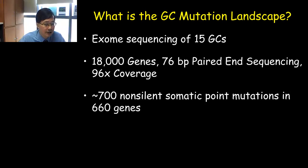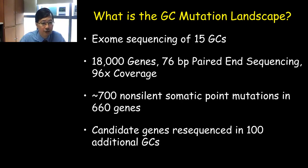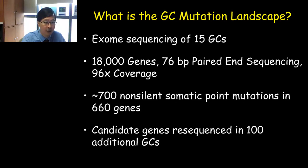Collectively, in this initial discovery series of 15 gastric cancers, we identified about 600 genes containing at least one non-silent somatic mutation — meaning non-synonymous, frameshift, or stop codon. Some of these genes proved particularly interesting from a biological standpoint and were taken for re-sequencing in a prevalence series of 100 additional gastric cancers, done at that time using Sanger sequencing. This was one of the first such studies, and we did find something interesting.